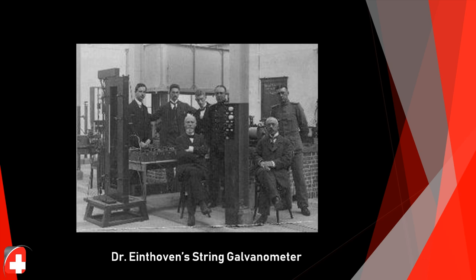This is his string galvanometer. It uses a fine quartz string coated in silver to respond to electrical impulses. His early EKG machine was quite large and unwieldy by modern standards — about 600 pounds, filling two rooms and requiring five people to operate. It needed a special water jacket around the big electromagnets to prevent them from overheating.